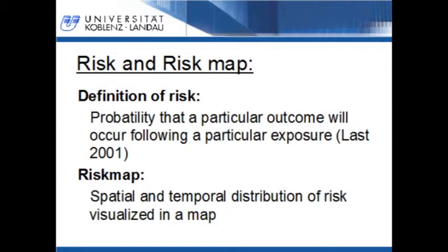Risk in the field of public health is defined as the probability that a particular outcome will occur following a particular exposure. This means that the risk to suffer an adverse effect on human health is directly related to the exposure to a stressor, like toxic substances or pathogens. Thus, the risk on human health can be modeled by considering the occurrence and the dimension of the stressor.